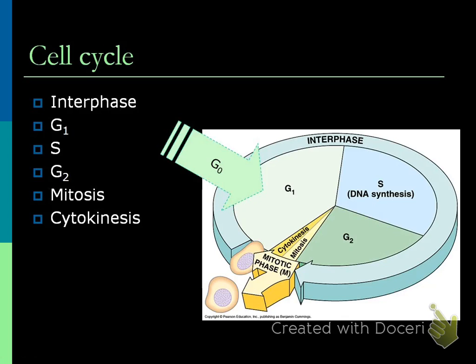So the cell cycle - most of the time is in interphase. If you look at this little map, look how much is interphase. About 90% of your cell cycle - this is basically how your cell normally appears. About 90% of the time it's in interphase.